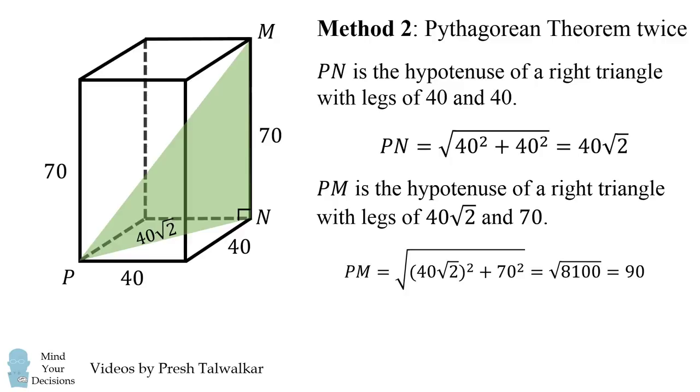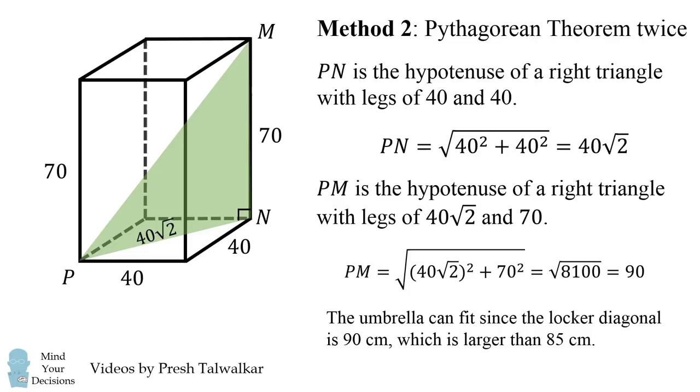So once again, we've calculated PM is 90. So once again, we can say the umbrella can fit since the locker diagonal is 90 centimeters, which is larger than the umbrella, which is 85 centimeters.